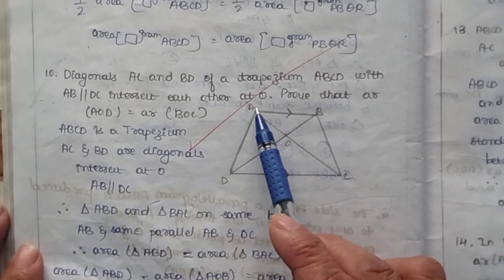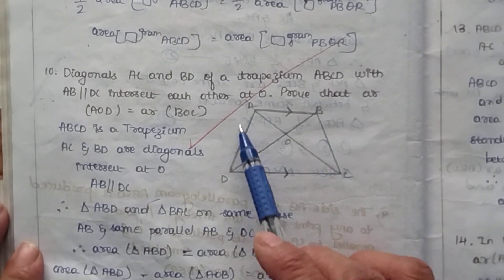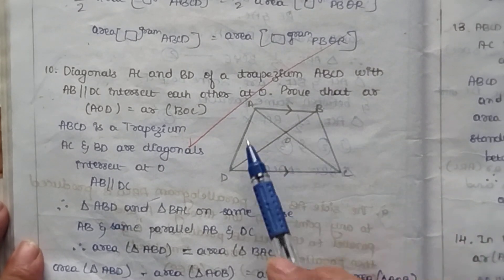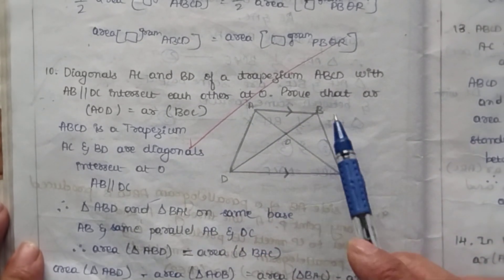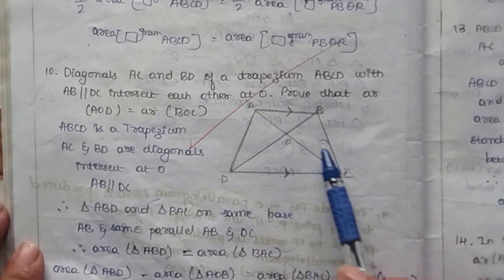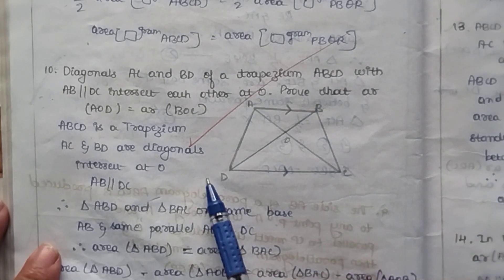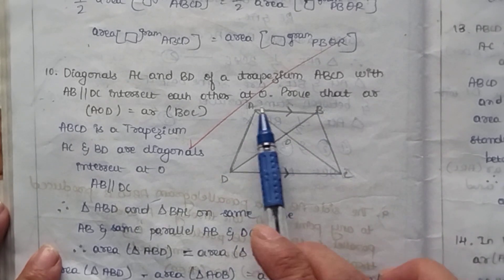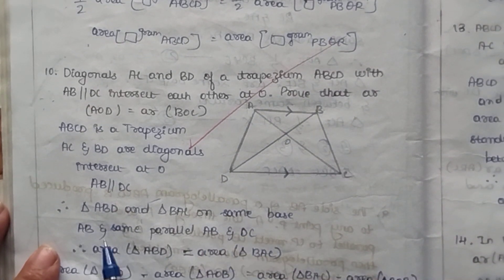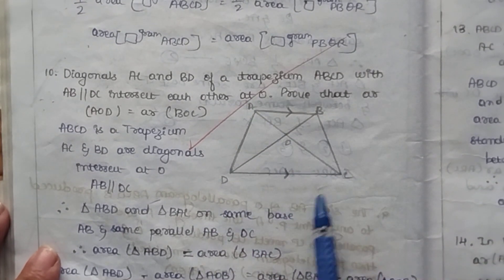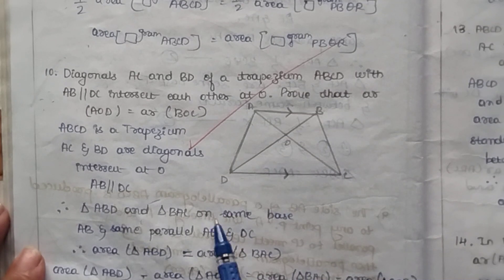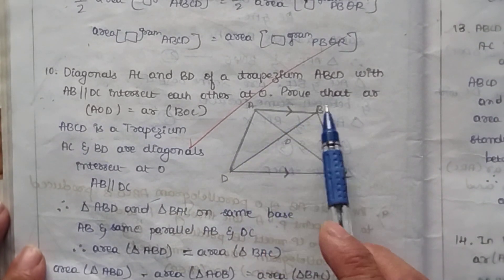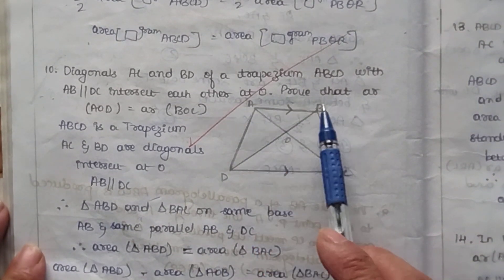In the solution, ABCD is a trapezium, and AC and BD are the two diagonals intersecting at O, with AB parallel to DC. Now consider triangles ABD and BAC. These two triangles stand on the same base AB, and AB and DC are the parallel lines. Since they have the same base and lie between the same parallels, triangle ABD is equal to area of triangle BAC.